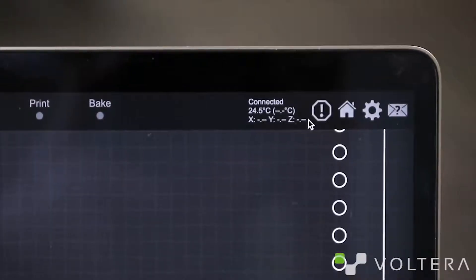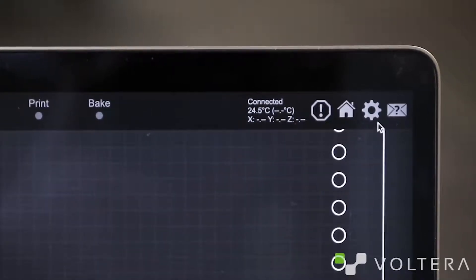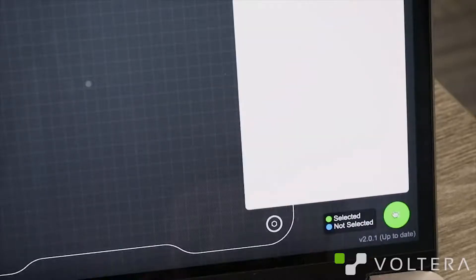Okay, before we print this circuit, let's take a quick look at the sidebar. There's status info with current temperature and print head position, an emergency stop, a home button to return the print head to the starting point, a settings panel, and a support button to report problems or ask questions of yours truly.